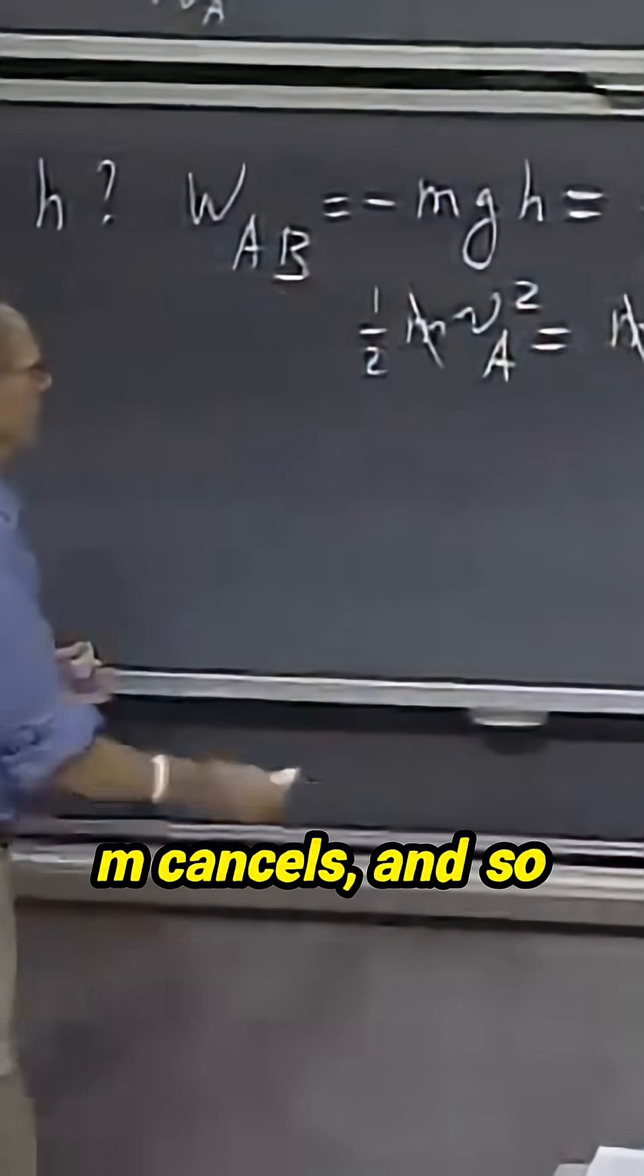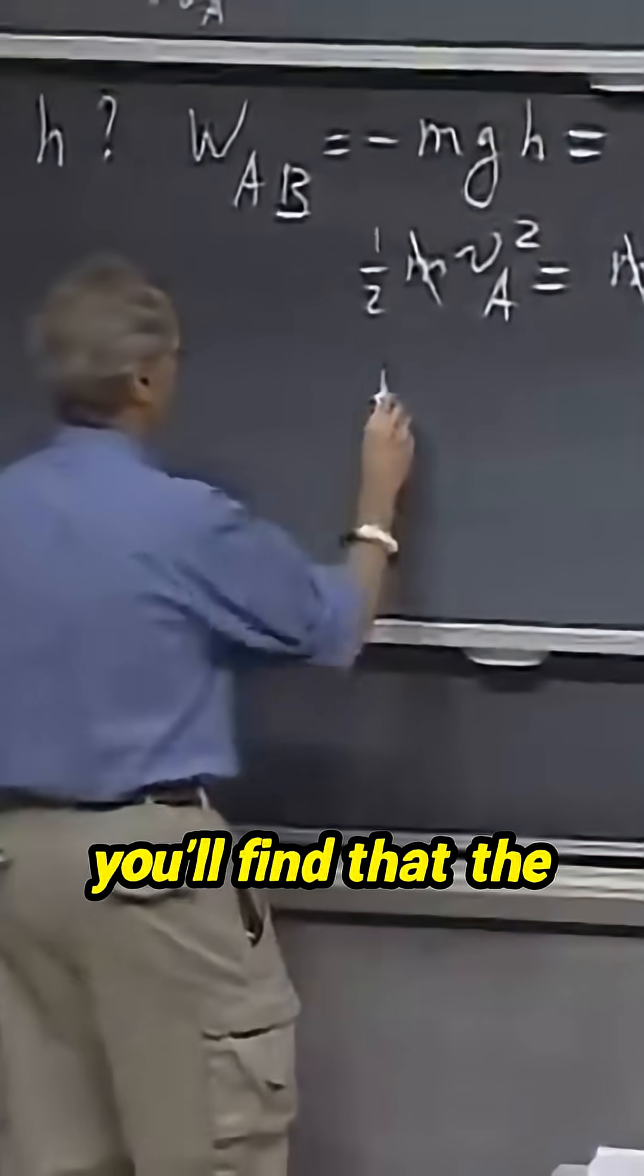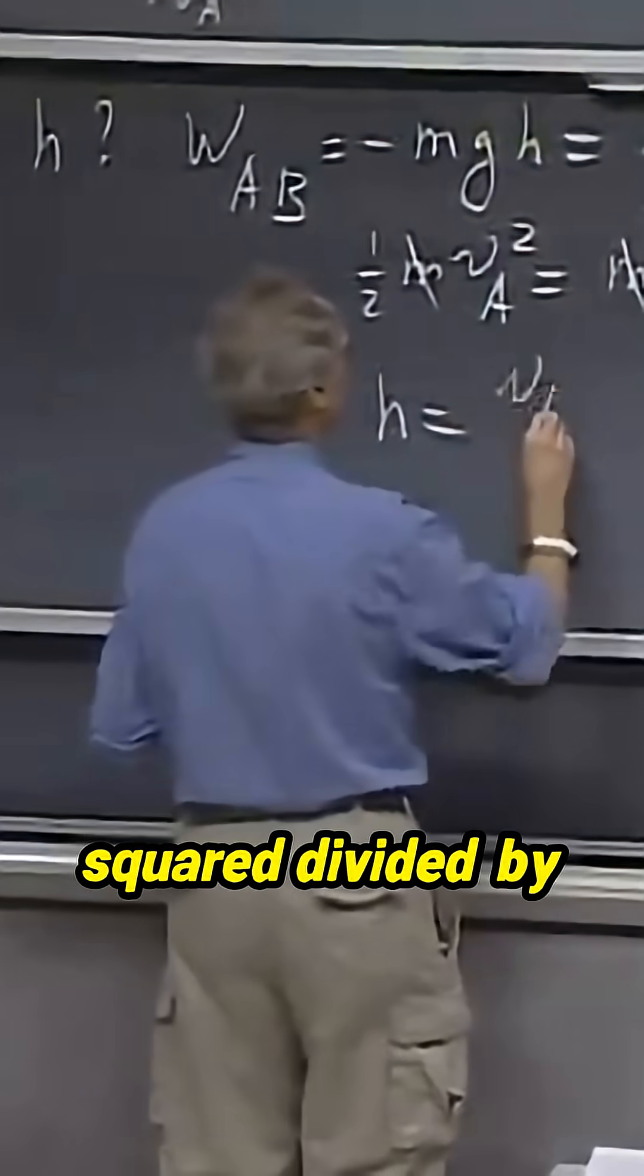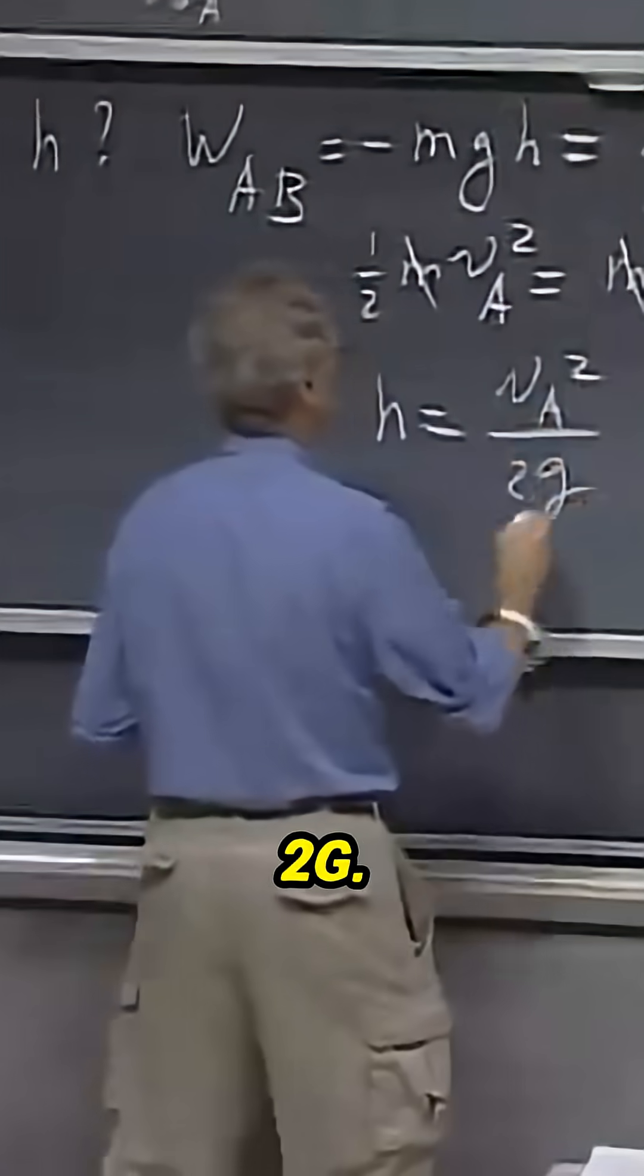m cancels, and so you'll find that the height that you reach equals v A squared divided by 2g.